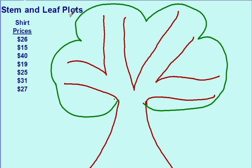Stem and leaf plots. Stem and leaf plots give you a way to organize information from least to greatest. For example, let's say you're looking for a new shirt and the prices are $26, $15, $40, $19, and so on.